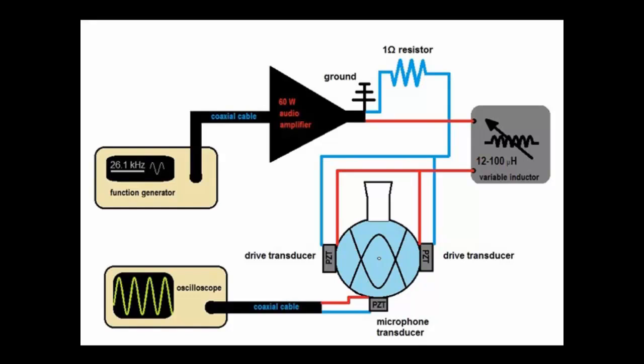The variable inductor tunes the circuit for impedance matching. That way, the transducers get maximum voltage, around 700 volts when I'm driving the flask at resonance.